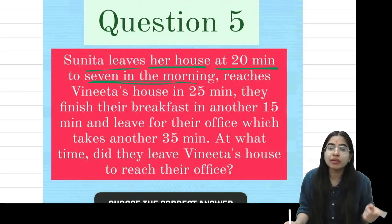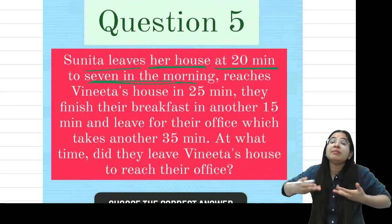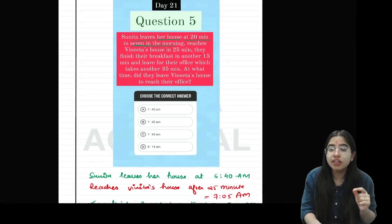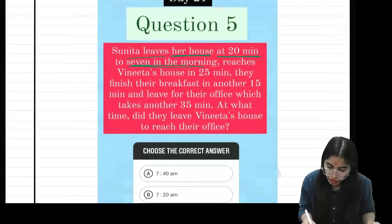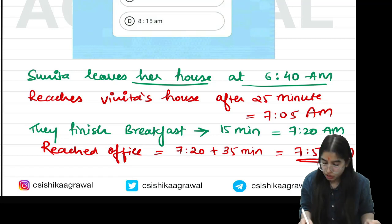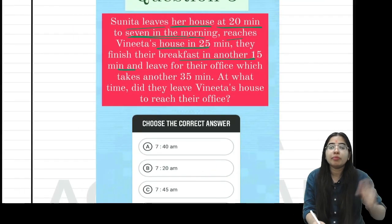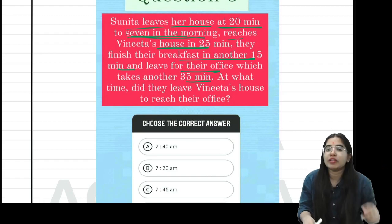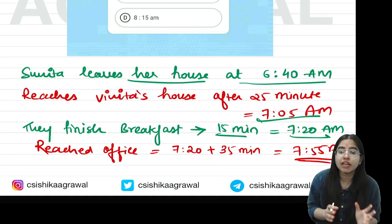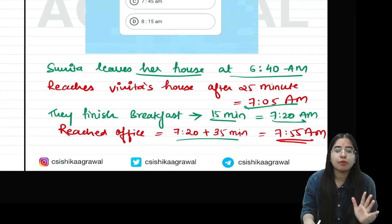When she says 20 minutes to 7, that means 6:40 — not 7:20. She reaches Vinita's house in 25 minutes, meaning she arrives at Vinita's house at 7:05. She stays there for 7 minutes, and then they have breakfast which takes 15 minutes, so breakfast is done at 7:20. Then they leave for the office. Office takes 45 minutes to reach. So they reach the office at 8:05.